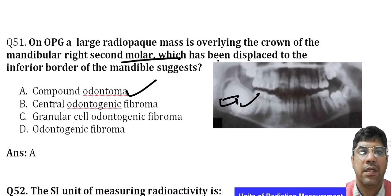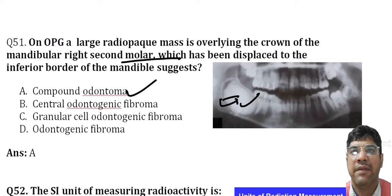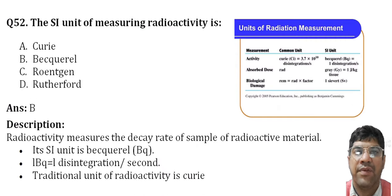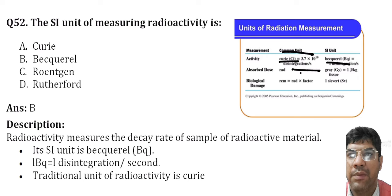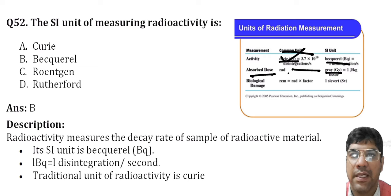The SI unit for measuring radioactivity is the becquerel. Remember the SI unit is becquerel; the common unit is curie. For absorbed dose, the SI unit is gray and the common unit is the rad.